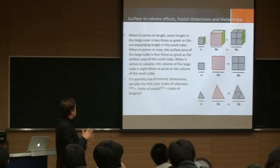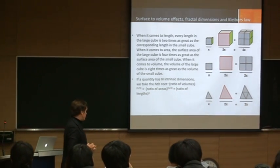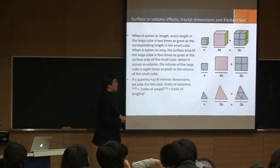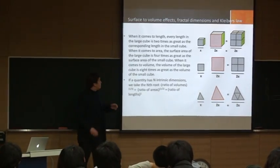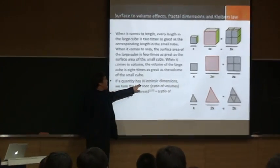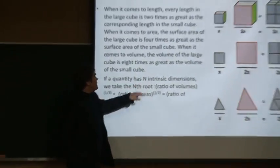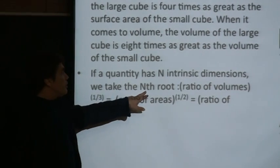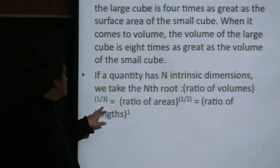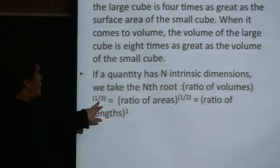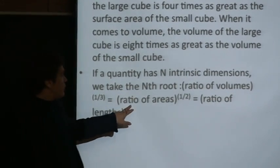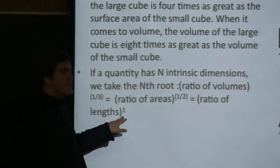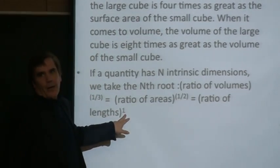Always have that in mind. You can make that more generic: if a quantity has n intrinsic dimensions, we take the nth root — ratio of volumes to the one-third, or ratio of areas to the one-half, or ratio of lengths to the power of one.